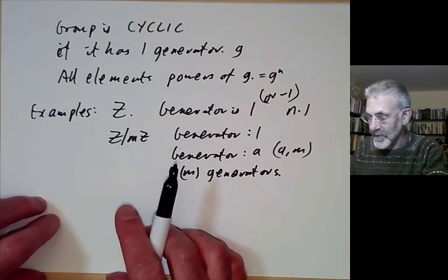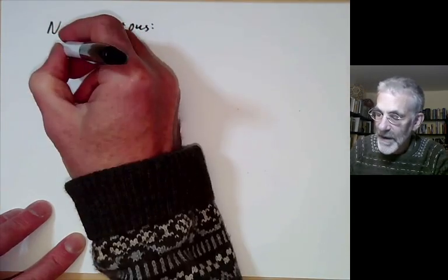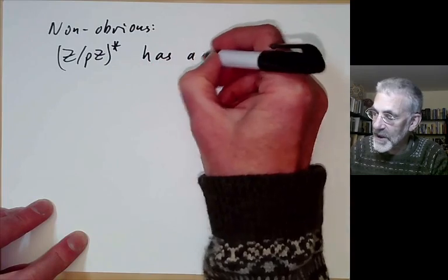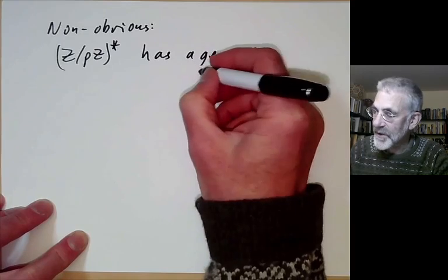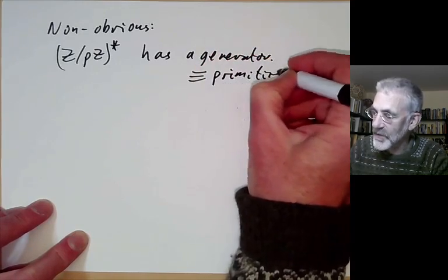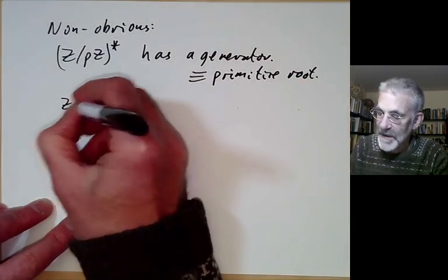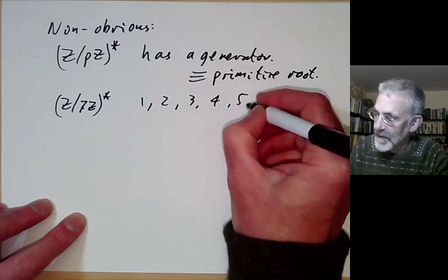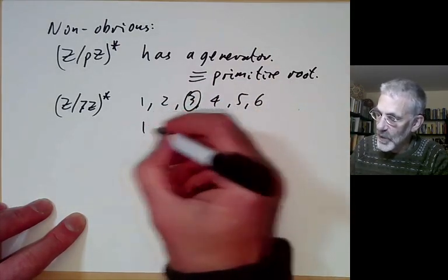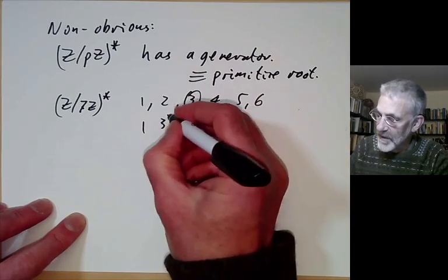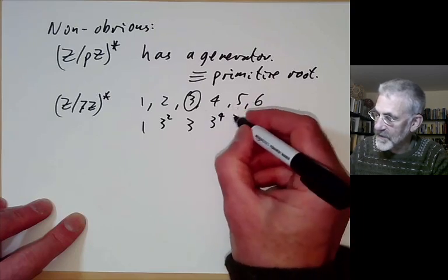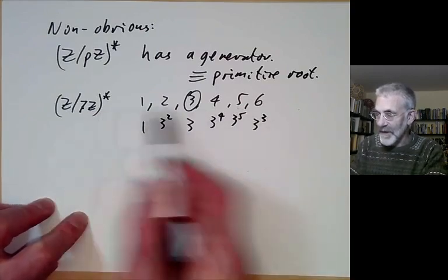Similarly, the integers modulo mZ are also cyclic, and we could take a generator to be 1, but we could also take any element a co-prime to m, because any element of this group is a multiple of a provided a is co-prime to m. So this group has phi of m generators. We've also seen some non-obvious cyclic groups: if we take the integers modulo pZ and take the non-zero elements under multiplication, this has a generator, which is the same as what we previously called a primitive root.